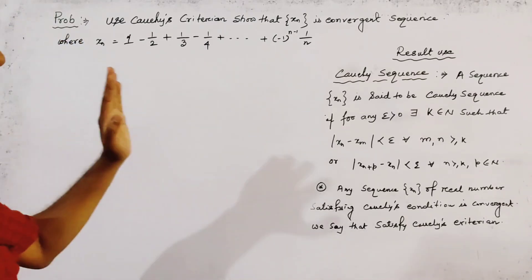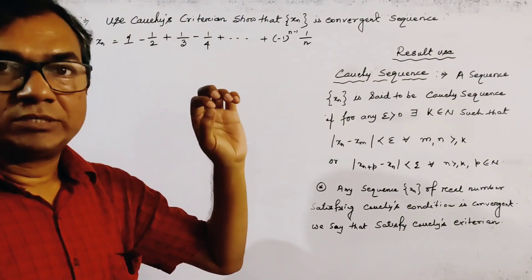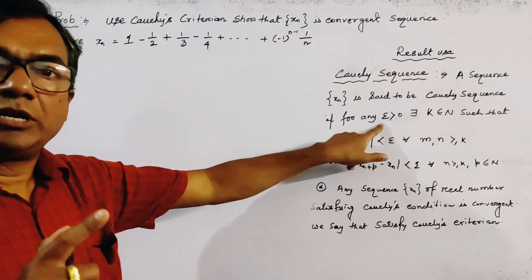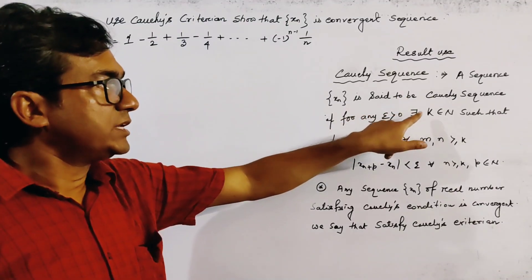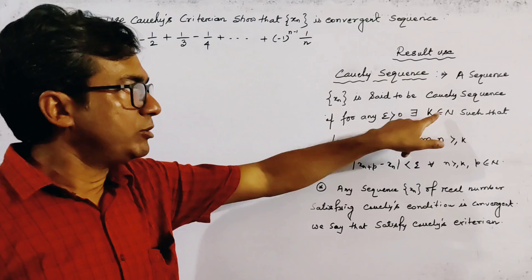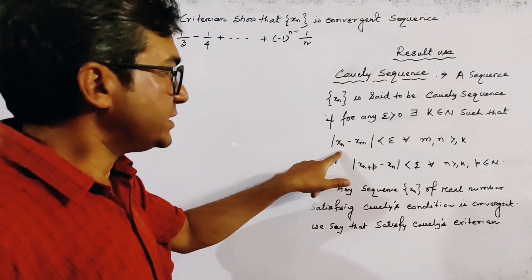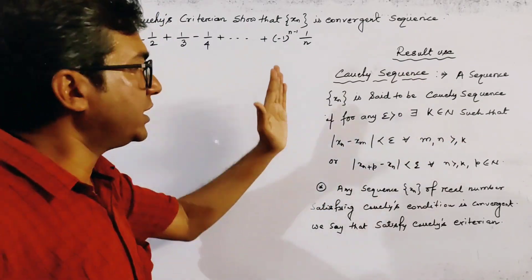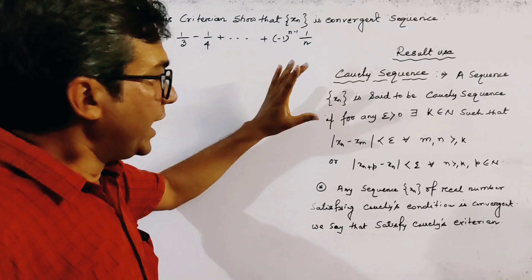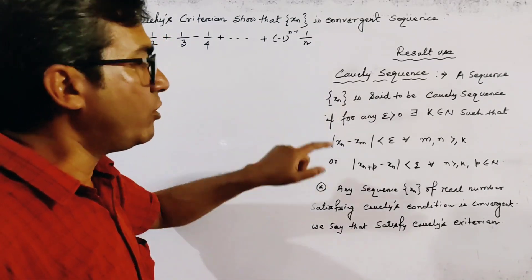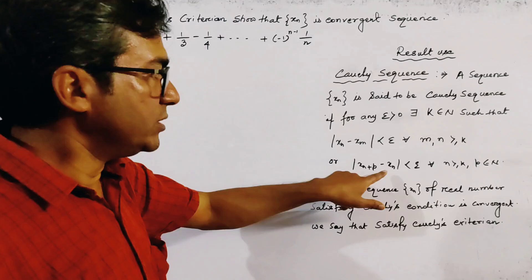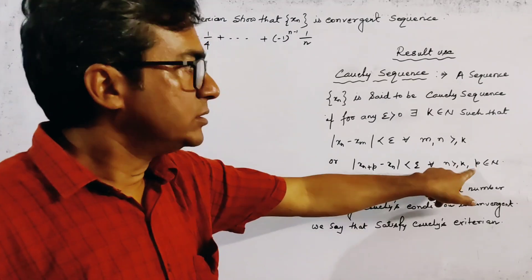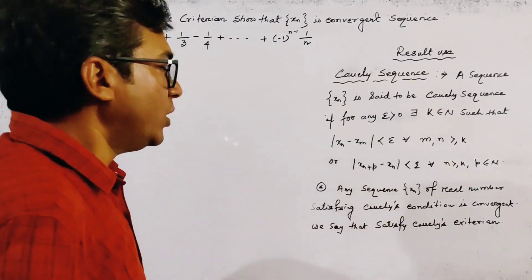Before solving this problem, we first recall what a Cauchy sequence is. Any sequence xn is said to be a Cauchy sequence if for any pre-assigned epsilon greater than zero, there must exist a natural number k such that |xn - xm| < epsilon for all n, m greater than or equal to k. This is the definition of a Cauchy sequence.